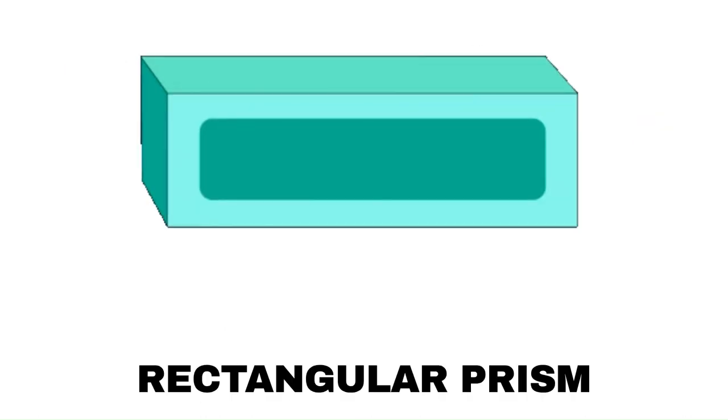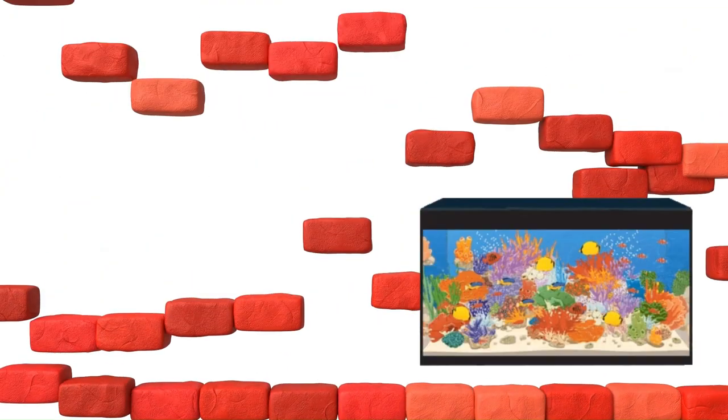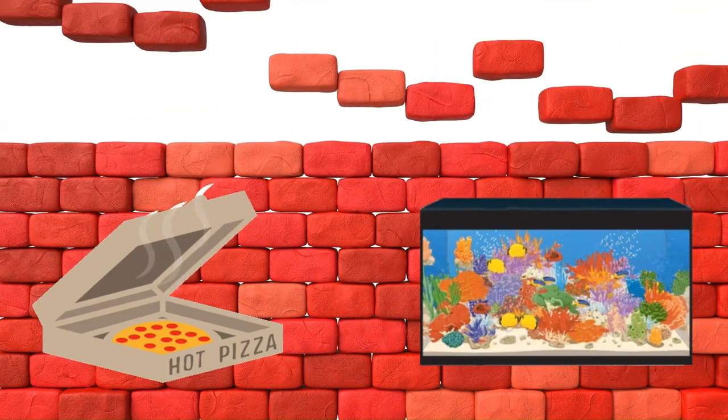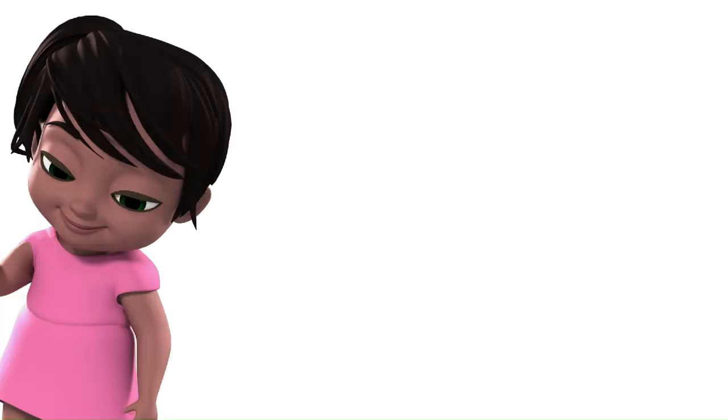This 3D shape is called a rectangular prism. Bricks, the pizza box, and the aquarium are all rectangular prisms.